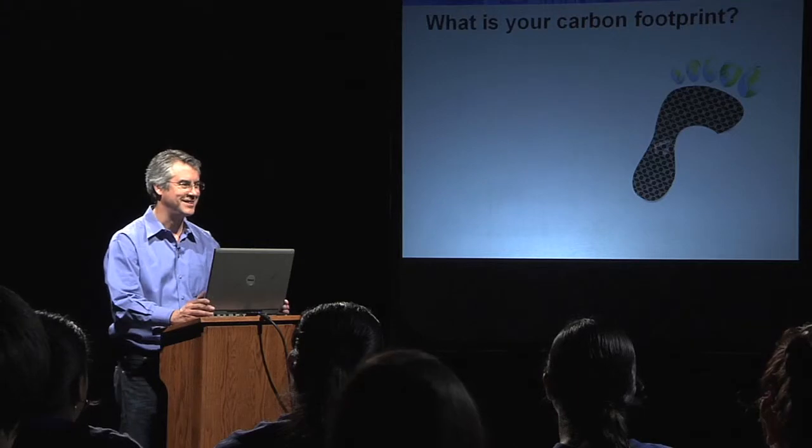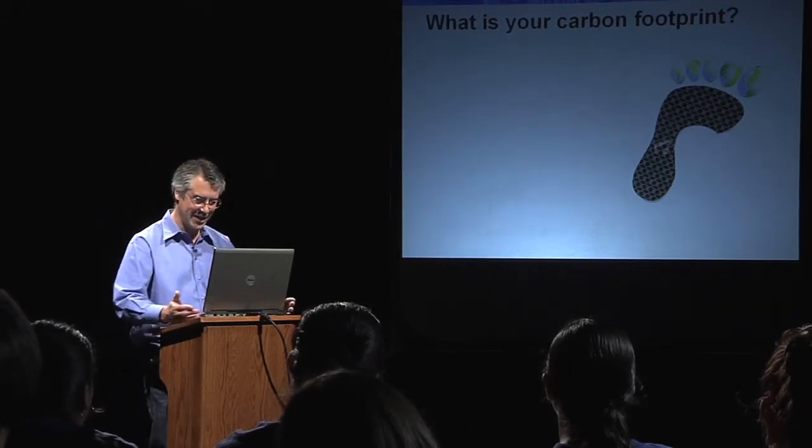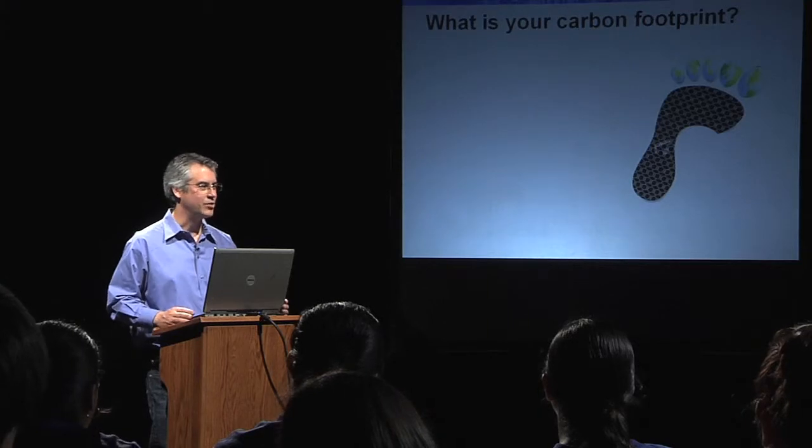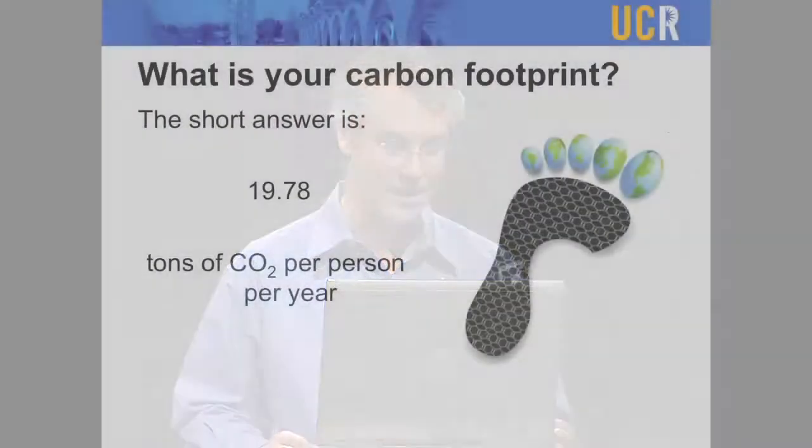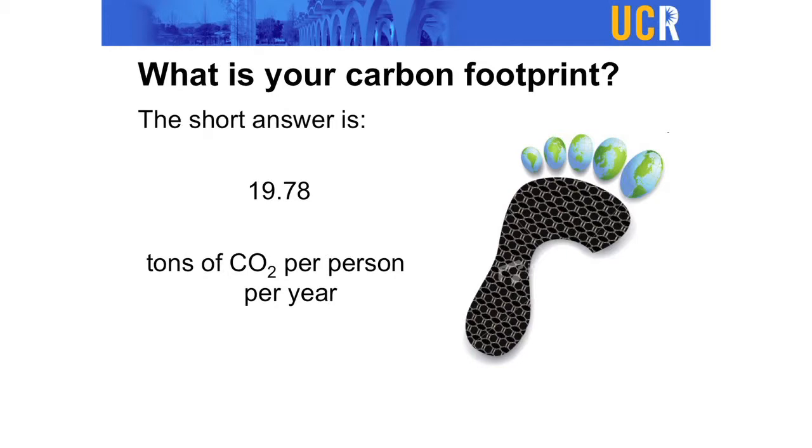So what is your carbon footprint? Like many questions, there's a short answer and a long answer. The simple answer is 19.78 tons of CO2 per person per year. This is easy to look up for different countries — you can find the carbon footprints of entire countries, divide by the number of people living there, and mathematically each person's share is 19.78 tons.